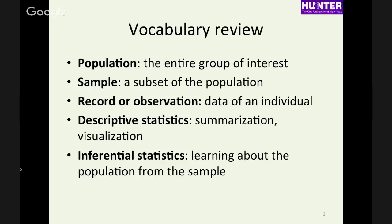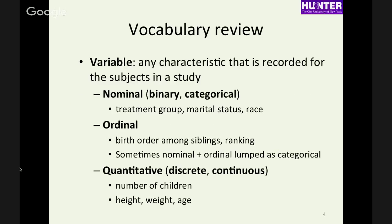The sample is a subset of that population. A record or observation is each measurement you make — if you have several variables, each record would be a measurement of those variables on one individual. The three main types of statistics are experimental design, descriptive statistics, and inferential statistics. A variable is any characteristic we're interested in and collect data on. The main types are nominal, ordinal, discrete, and continuous.